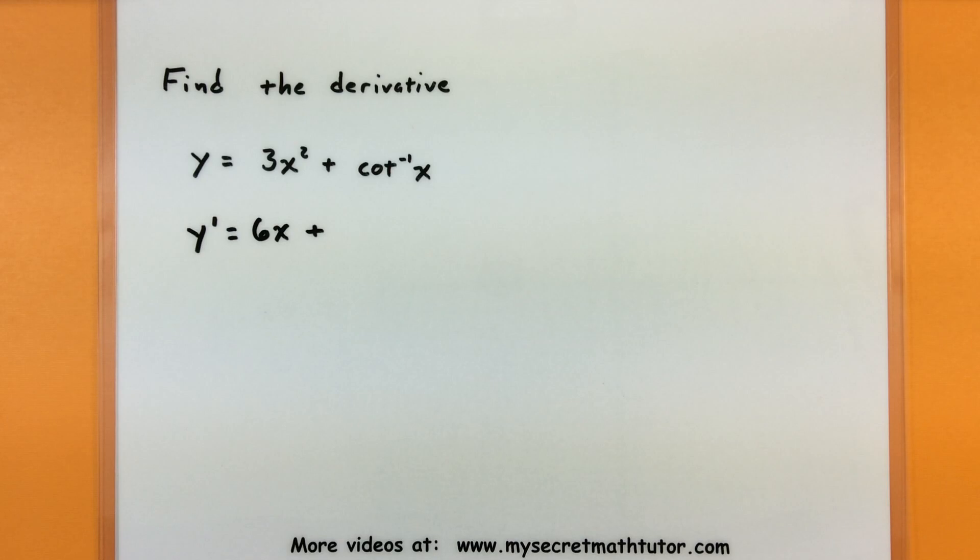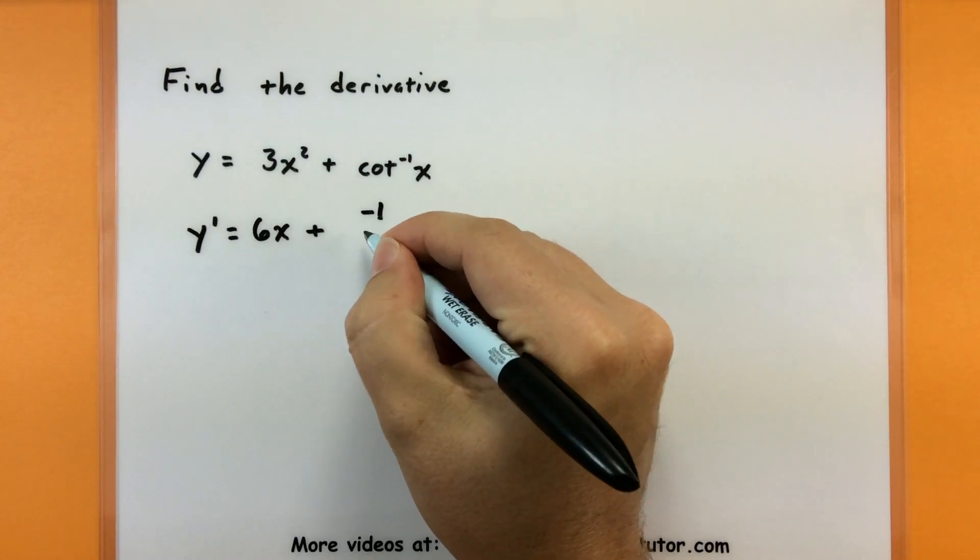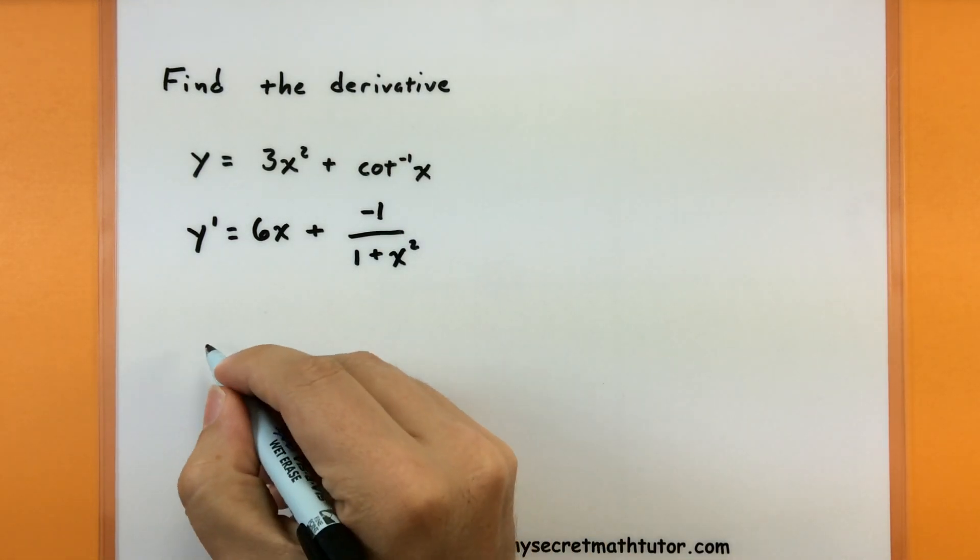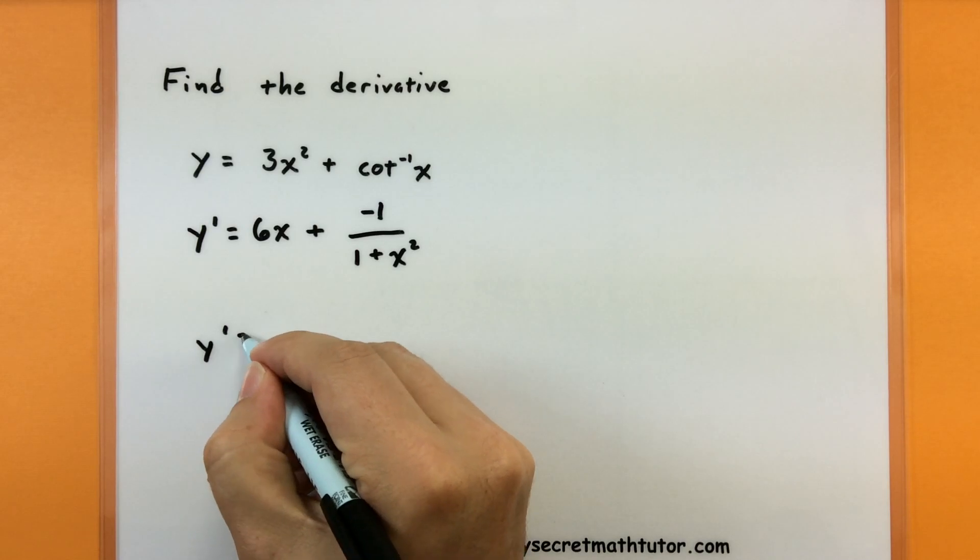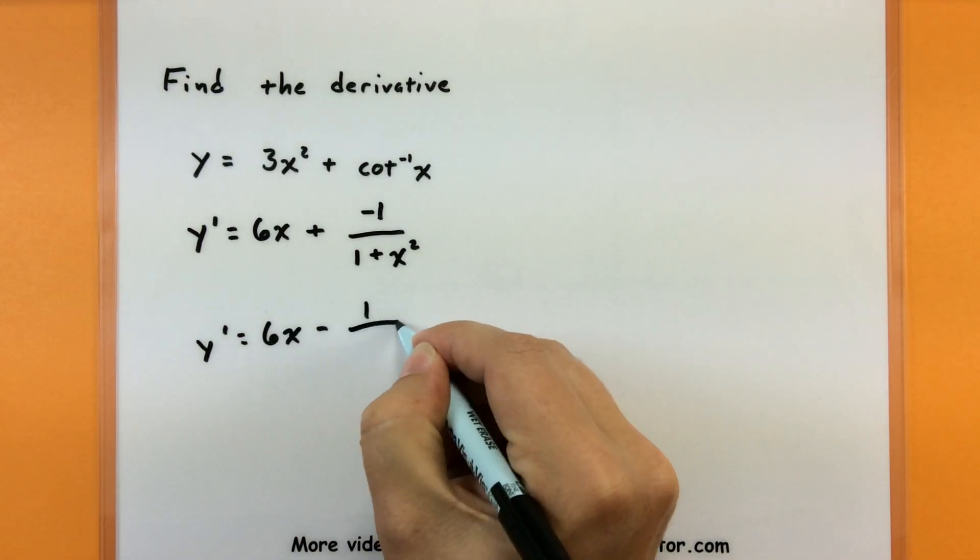Now comes the really interesting one, what is the derivative of inverse cotangent? Well it's negative 1, all divided by 1 plus x squared. Isn't that crazy? And of course we could clean this up a little bit, call it 6x minus 1 over 1 plus x squared.